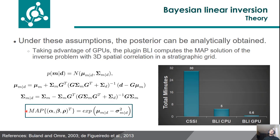Taking the advantages of GPU, our plugin computes the maximum posterior solution of the inverse problem with a 3D spatial correlation in a stratigraphic grid. This graph shows how our plugin is a very efficient method, which demands less computational effort than other techniques. And when implemented in GPU, it is even more efficient — it was possible to reduce eight times the computational time required when running CPUs.